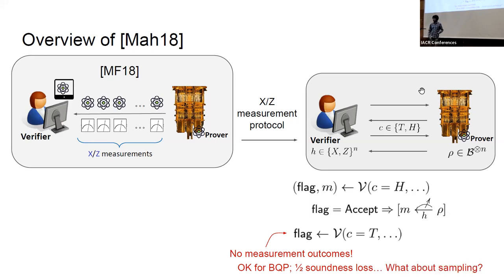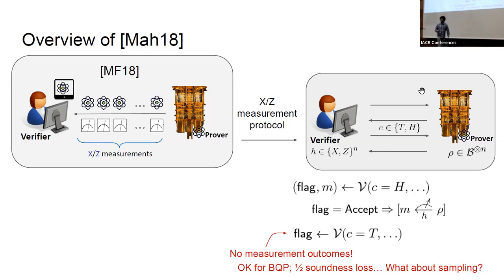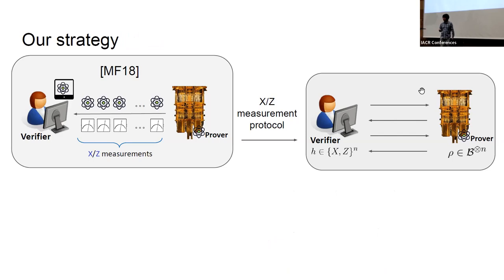This is not an issue for BQP decision problems, where the verifier could accept the prover anyway, suffering only a one-half soundness loss. But for sampling problems this is problematic, because we do not get a measurement outcome half of the time.